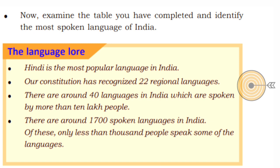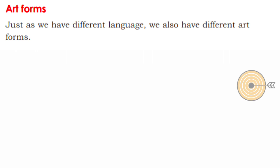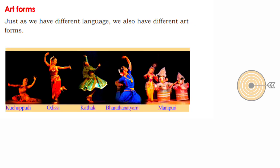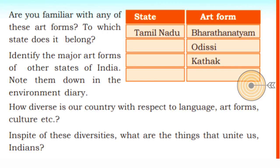Now we discuss art forms. Just as we have different languages, we also have different art forms. Art forms such as Kuchipudi, Odissi, Kathak, Bharatanatyam, and Manipuri — are you familiar with any of these art forms? To which state does each belong? Identify the major art forms of other states of India and note them down. How diverse is our country with respect to language, art forms, and culture!